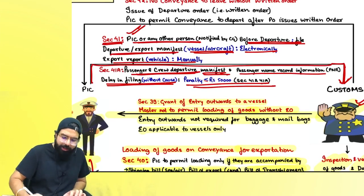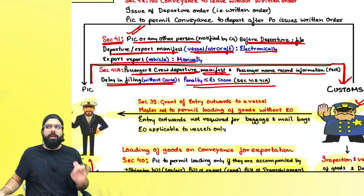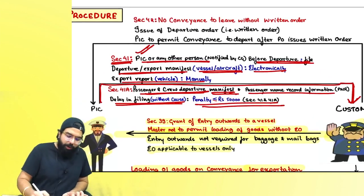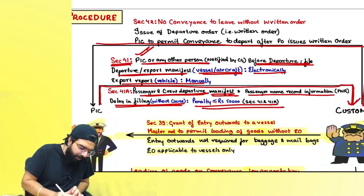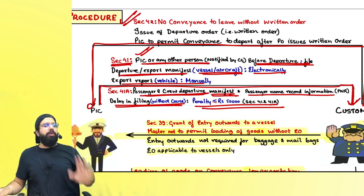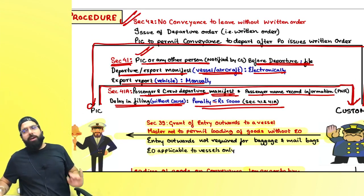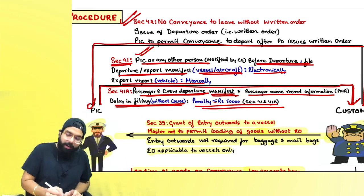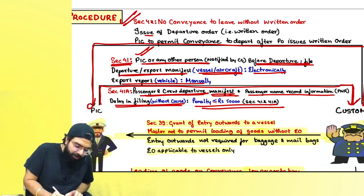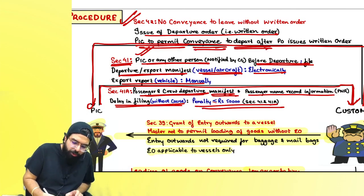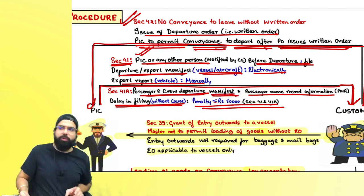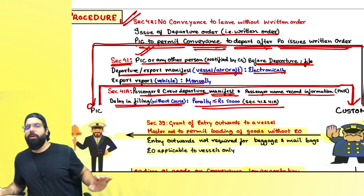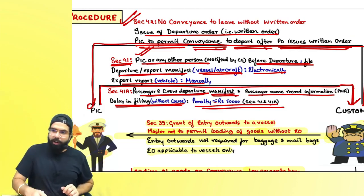Once you tell the officer what goods you are taking and who the passengers are, section 42 comes into picture: no conveyance may leave without a written departure order. Only after the proper officer issues a written departure order can the conveyance depart.